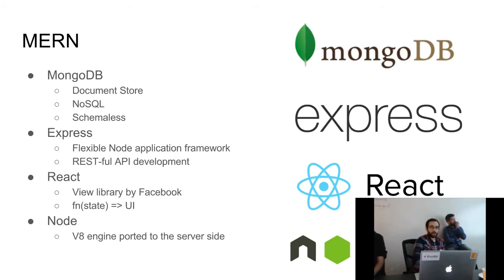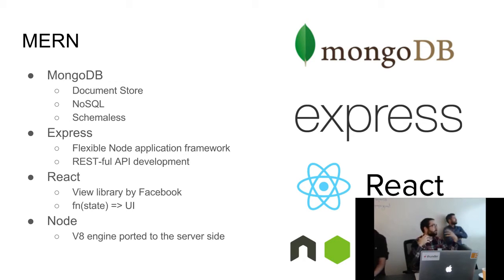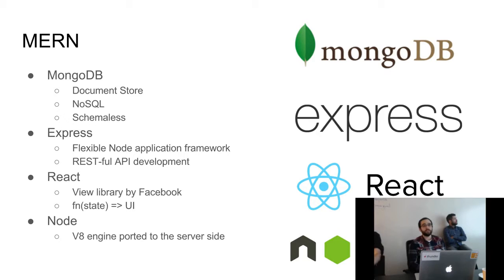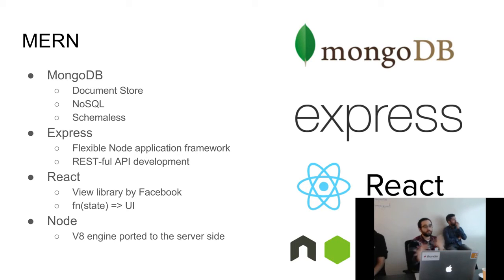MongoDB is a document store — NoSQL and schemaless. What that means is it behaves a lot like JSON. You put JSON in, you get JSON out, and you query and manipulate it as such. The trade-off is that you don't have a schema without any help from libraries. It's essentially key-value pairs, and whatever you put in there, Mongo will take and you can take back out without any hassle.